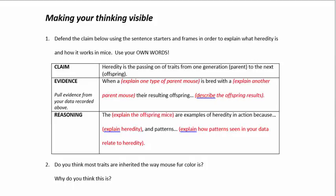Now for the reasoning part, you have to explain the offspring mice. So whatever you picked for the evidence, you would explain that in the reasoning. So the either black and white mice offspring, or only black offspring, or only white offspring are examples of heredity in action because you can say several things here: dominant recessive traits are passed down, only shown, so on and so forth.